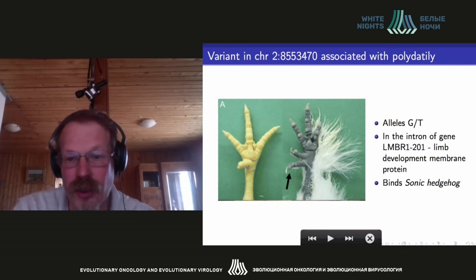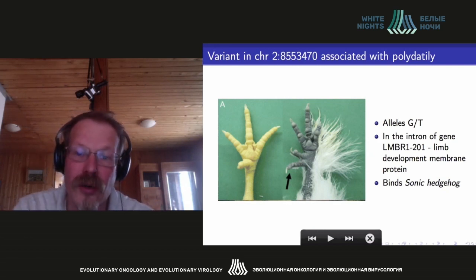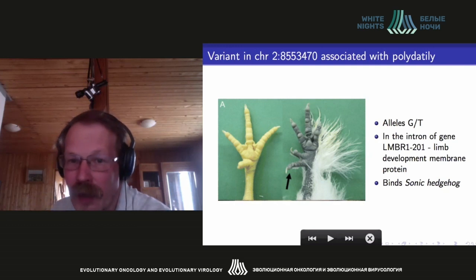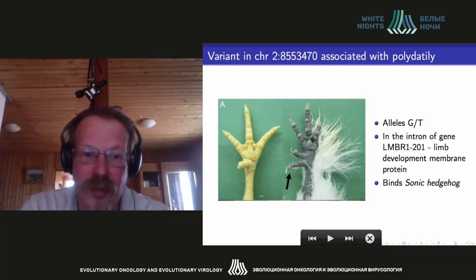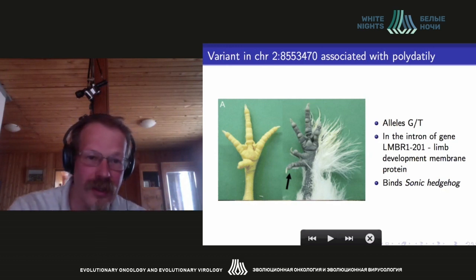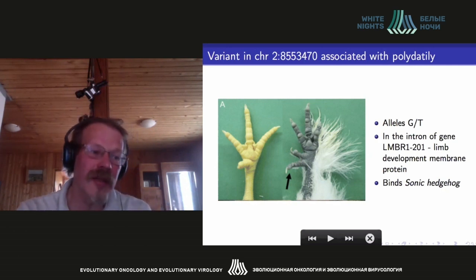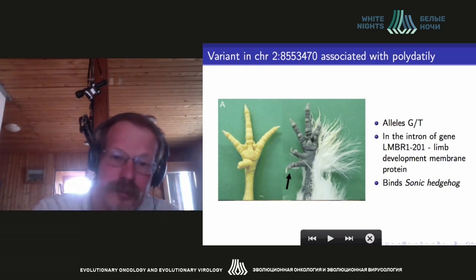In this case, the sonic hedgehog protein can't bind to the regulatory site located in the intron of the protein LMBR1. As a result, a hand develops a great number of fingers — instead of four, it may have six or seven, as shown in this photo. A single point substitution in the DNA can lead to serious morphogenetic consequences.